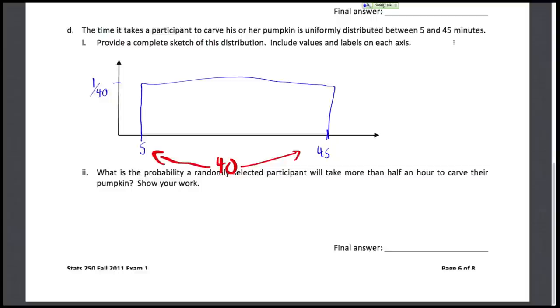All right. Of course, though, it says to make sure that we give all appropriate labels. Typically it's not necessary, but for a continuous distribution, the y-axis label is density. And then our x-axis label is the time to carve a pumpkin. And of course, units is also important in minutes. As that otherwise we don't know what the meaning of 5, 45 or any number in between is.